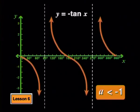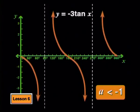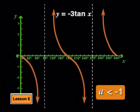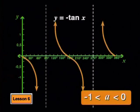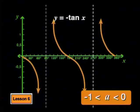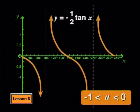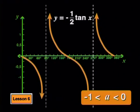You've seen how the graphs change when a is negative. The negative a value in the tan formula has the same effect as it had on the sine and cosine graphs. For a values less than negative 1, the graph is stretched vertically away from the x-axis. For a values between negative 1 and 0, the graph is pulled towards the axis.